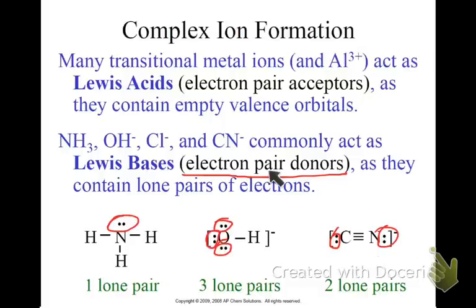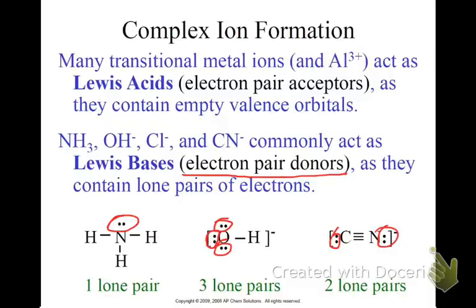Since they can donate those electron pairs, the things that they donate them to — the electron pair acceptors — become Lewis acids. In the case of complex ions, those would be the transition metal ions. These molecules that act as electron pair donors are called ligands in complex ion formations.